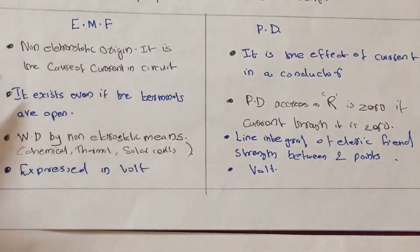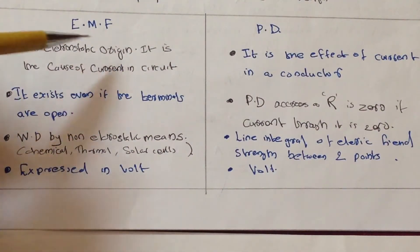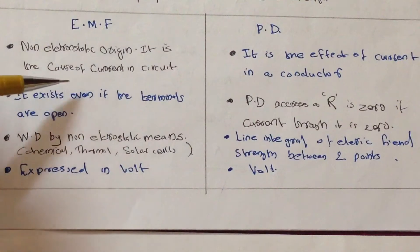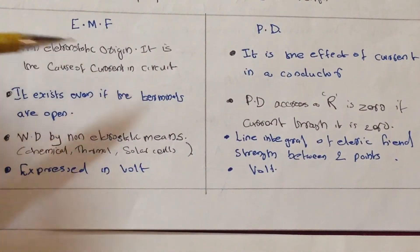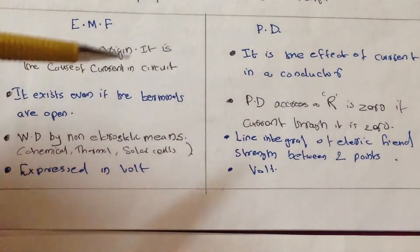First of all, EMF is known as electrostatic origin. It is the cause of current in a circuit. EMF, the electromotive force, is the only thing which causes the origination of current in the circuit.